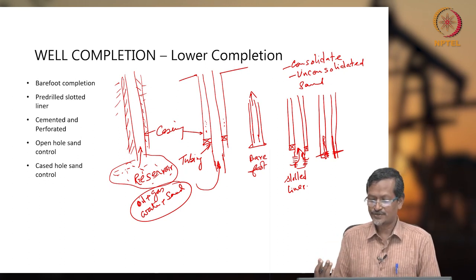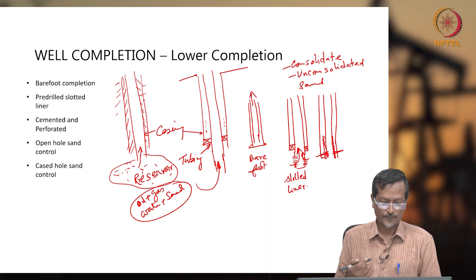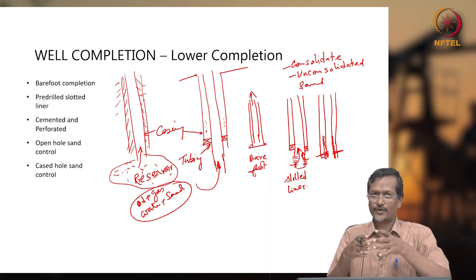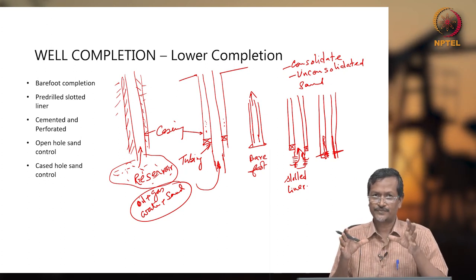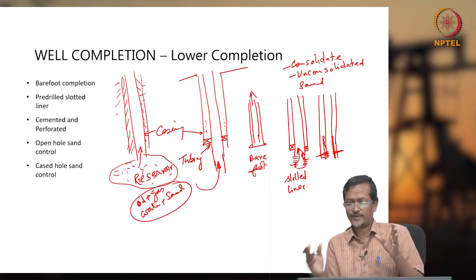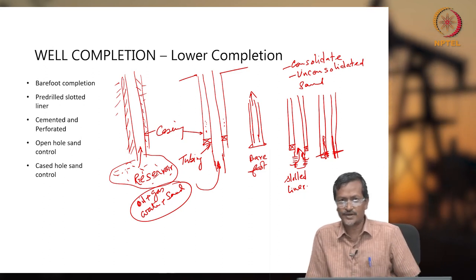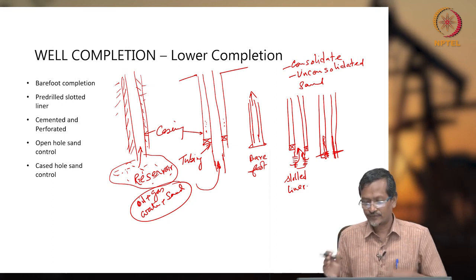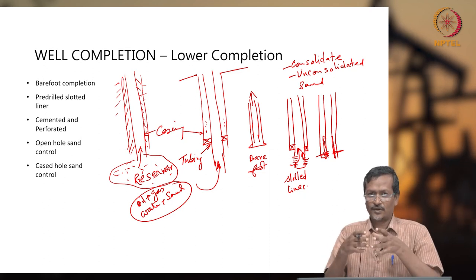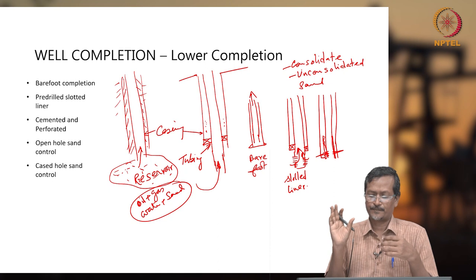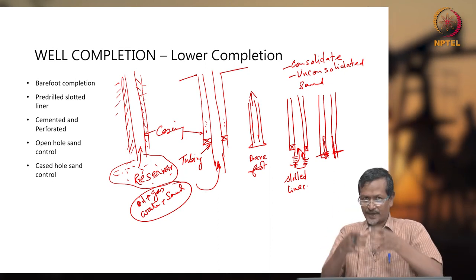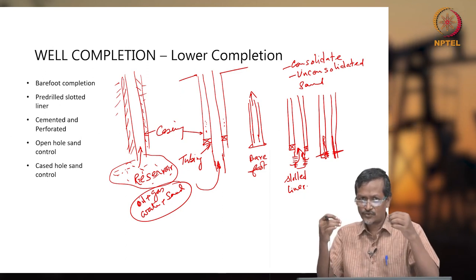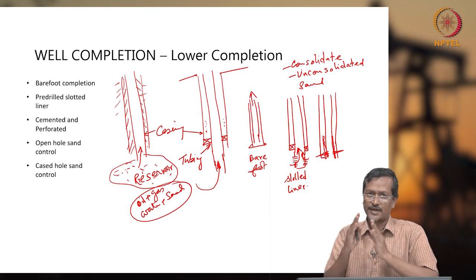In some cases, open hole sand control is done — you have only a pipe and no sand control equipment. Sand will come automatically; in unconsolidated cases you cannot do that, but in consolidated cases maybe you can allow it. So different types of sand control: drill a hole and don't worry about sand, or drill a hole and put a slotted liner with small holes to reduce the amount of sand coming into the wellbore.